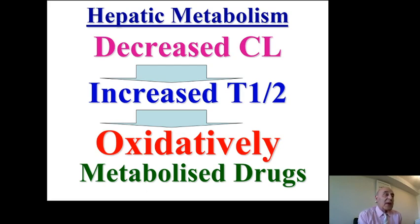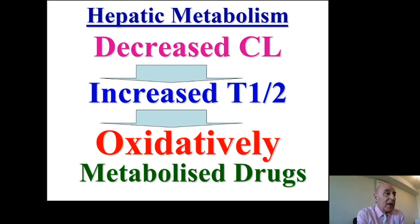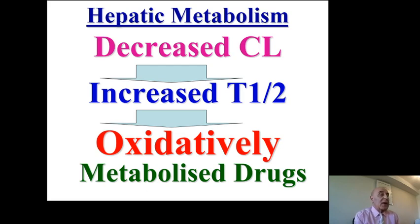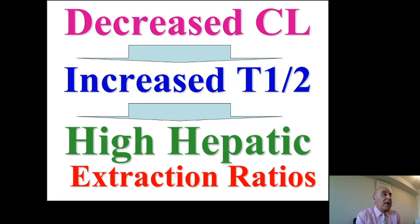Regarding metabolism of drugs in the liver, the clearance of medications metabolized by oxidation is expected to decrease, with a prolongation in half-life. This is applicable to drugs metabolized in the liver by oxidation. With decreased clearance, there will be a high hepatic extraction ratio and increased half-life. For renal excretion, clearance is decreased and elimination half-life is increased — applicable to renally eliminated drugs and their active metabolites.